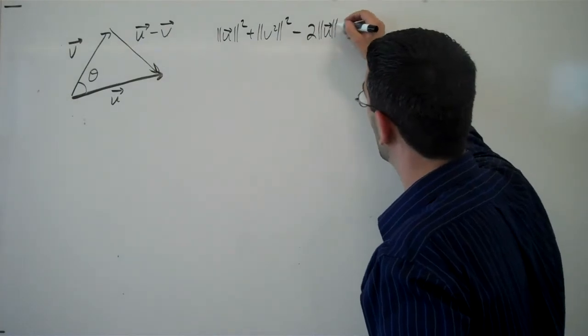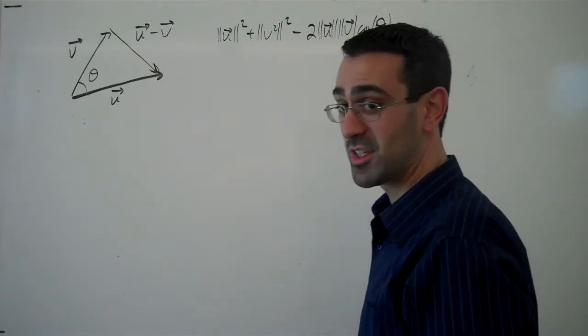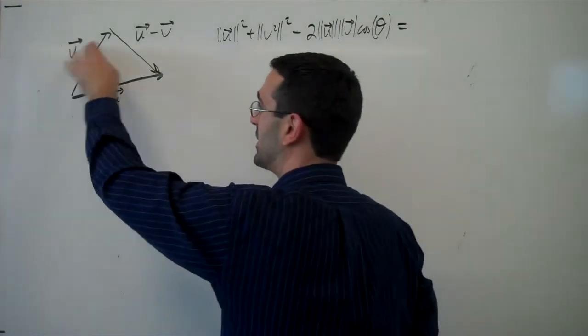magnitude of u, magnitude of v, cosine theta. So this is law of cosines, right? We've got a, b, and c here,